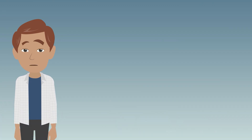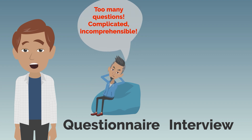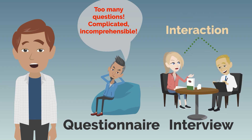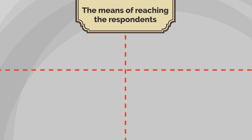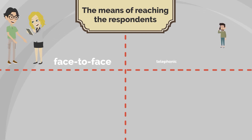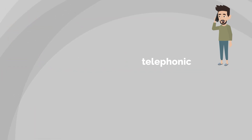In the case of quantitative research in marketing, the basic division of data collection methods includes the questionnaire and the interview. In the case of a survey, it is assumed that the respondents will complete the questionnaire on their own. Therefore, it is important that the form doesn't contain too many questions, as it might prevent the respondent from completing it. Moreover, the questions shouldn't be complicated, but clear and understandable. The interview, in turn, assumes interactions between the subject and the researcher — in quantitative research, it takes the form of an arranged, standardized conversation. As for the means of reaching the respondents, we can distinguish four basic ones: face-to-face, telephonic, mail, or online.